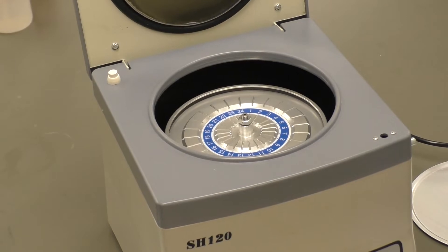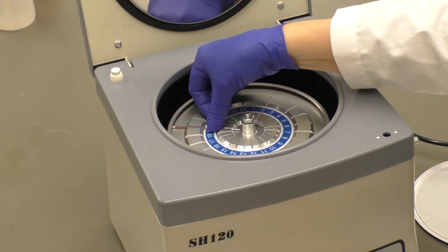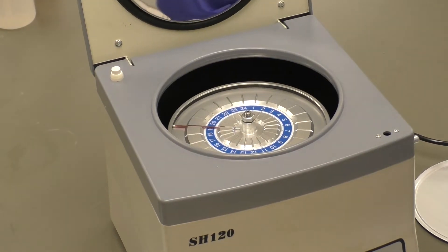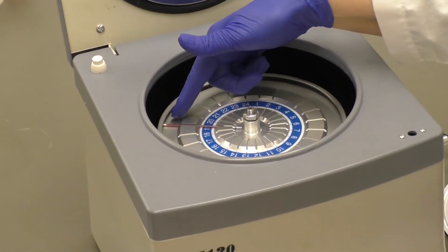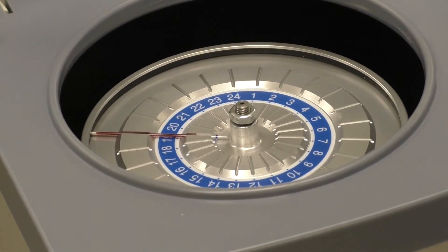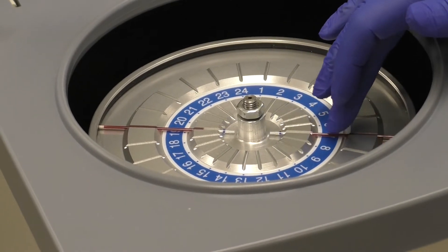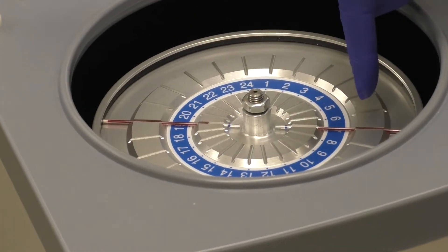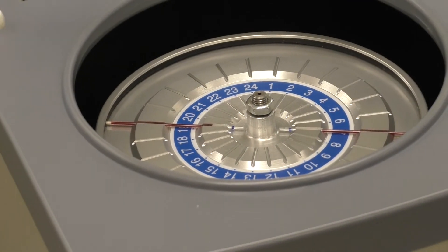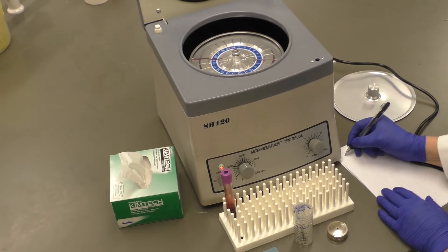Place the filled and sealed capillary tubes into the centrifuge. The sealed ends should point toward the outside of the centrifuge. The duplicate samples should be placed opposite each other in order to balance the centrifuge. Record the position number of each specimen.